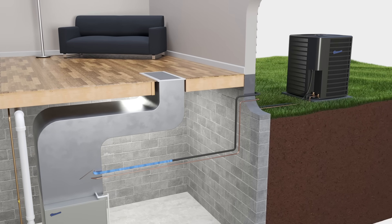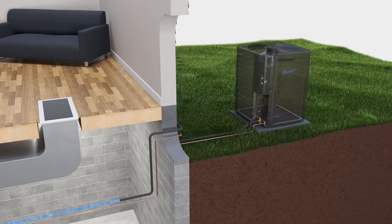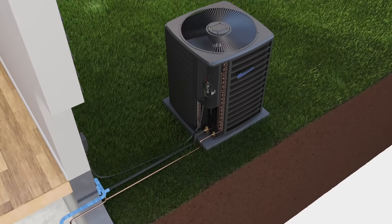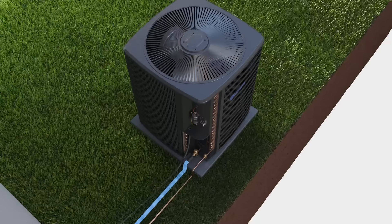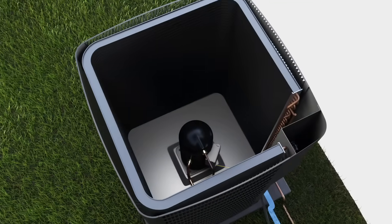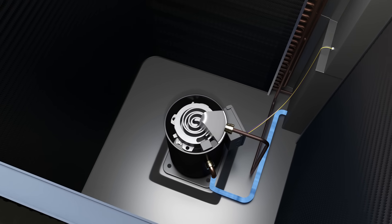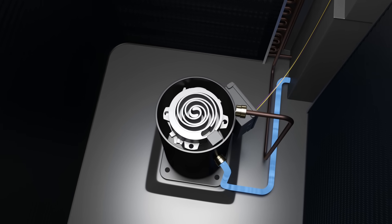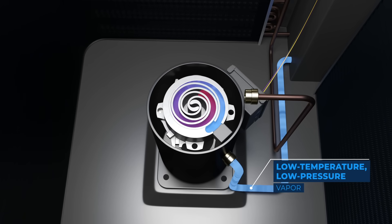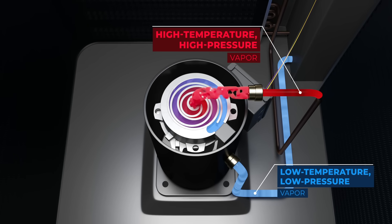The first step begins with setting your thermostat to the desired temperature. This triggers the condenser fan and compressor to turn on. The compressor begins pumping a fluid called refrigerant throughout the system. Refrigerant is used because of its low boiling point — it constantly changes from a vapor to a liquid in order to move heat from inside your home to the outdoors. It enters the compressor as a low temperature, low pressure vapor.